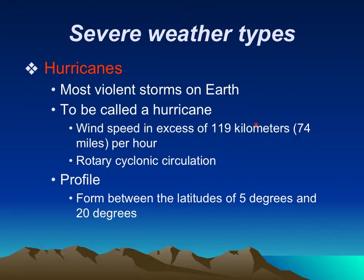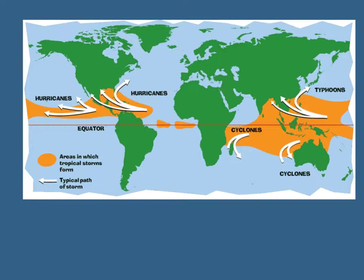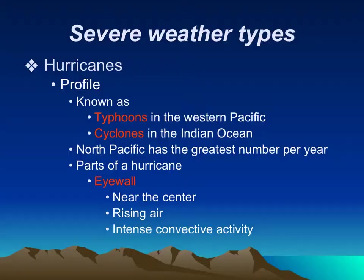Moving on to hurricanes — the most violent storms on Earth. In order to be called a hurricane, it has to reach 74 miles per hour in wind speed. They occur between latitudes of 5 and 20 degrees. The ones we experience are on the East Coast, resulting from warm air coming off the western coast of Africa, picking up moisture in the Atlantic Ocean, and then curling northward towards our eastern seaboard — sometimes even getting into the Gulf of Mexico. Depending on where you live, they're called different things: typhoons in the western Pacific, cyclones in the Indian Ocean. The North Pacific actually has the most.